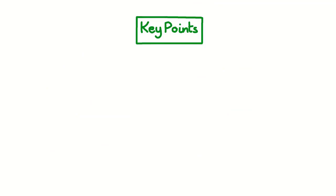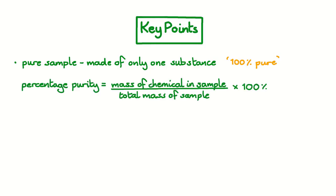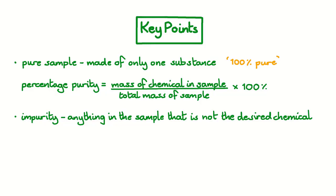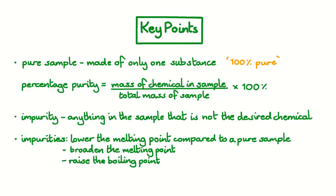Let's look back at the key points. In chemistry, when we use pure to describe a sample, we mean it's made of only one chemical substance, and we might call that sample 100% pure. We often describe purity using percentage purity, which gives us the percentage of the mass of the sample that's due to the particular chemical. We calculate this by taking the mass of chemical in the sample, dividing by the total mass of the sample, and multiplying by 100%. An impurity is simply any other substance that isn't the desired one. If we introduce impurities into a pure sample, we'll lower the melting point and broaden the temperature range between 100% solid and 100% liquid. And generally speaking, if we introduce an impurity to water — or other liquids — we'll raise the boiling point.